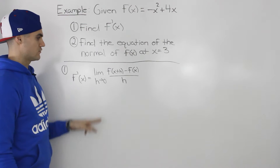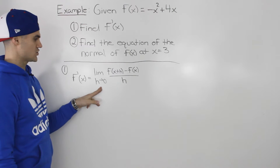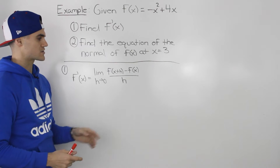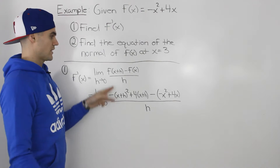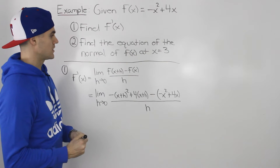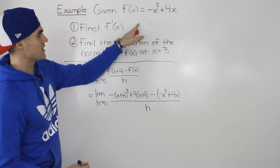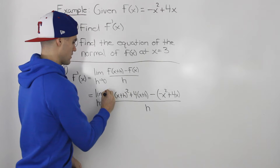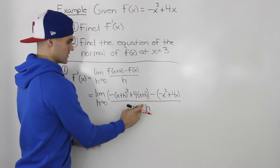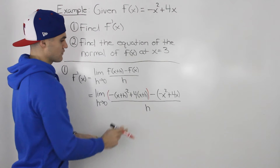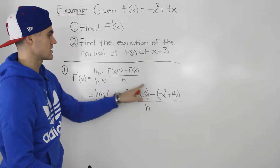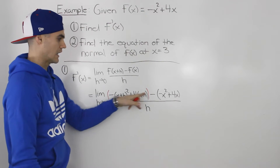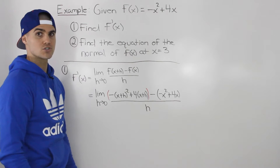To find the derivative we use the limit definition: the limit as h goes to 0 of f(x+h) minus f(x), all over h. So f(x+h) is found by plugging x+h into the x values of the function. This portion in red brackets is f(x+h), and then we're subtracting f(x), which equals -x² + 4x, all over h.